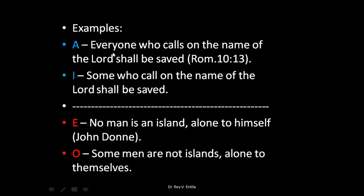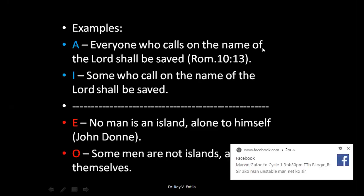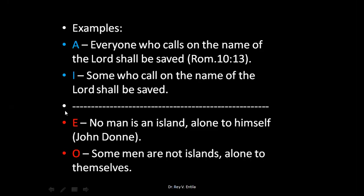For E and O: universal negative — 'No man is an island unto himself' (John Donne). And its subaltern, particular negative: 'Some men are not islands, all alone to themselves.' They are subalternates — they don't truly contradict each other but differ only in quantity.